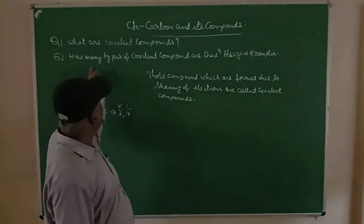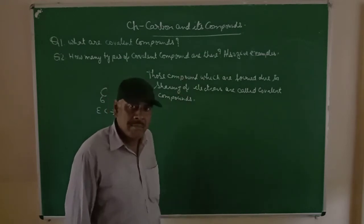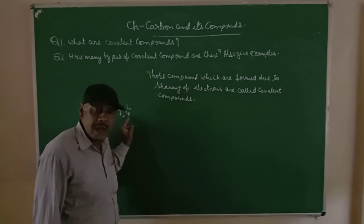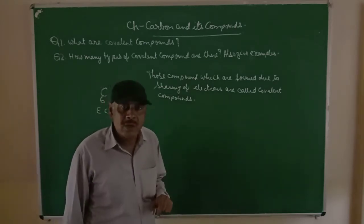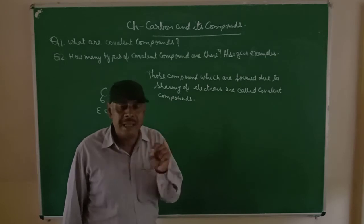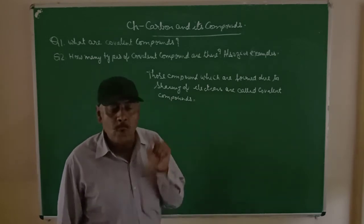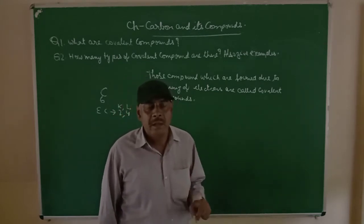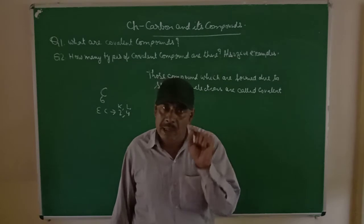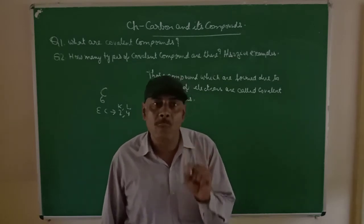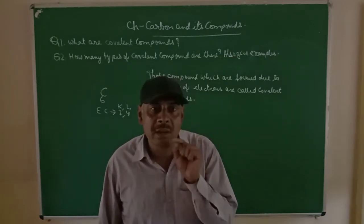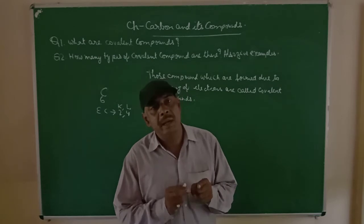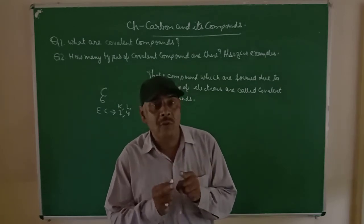The second question is: how many types of covalent compounds are there? We know that carbon has four electrons in the outermost shell — carbon is tetravalent. That means all four electrons in the valence shell are ready to undergo sharing. Hence, chances are there that a single covalent compound, double covalent compound, or a triple covalent compound can be formed. That means there can be a single bond between carbon-carbon atoms, or sharing of two electrons each, between carbon and carbon.